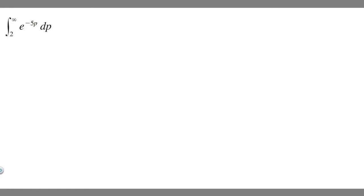In this problem, we're told to evaluate the improper integral from 2 to infinity of e to the minus 5p dp. In order to solve an improper integral like this, what you're going to want to do is rewrite it as a limit.